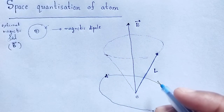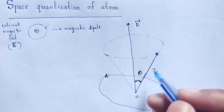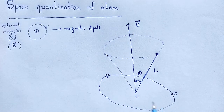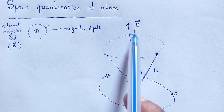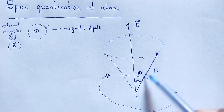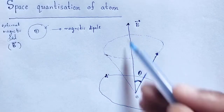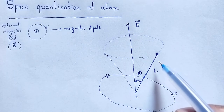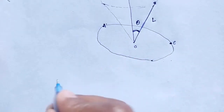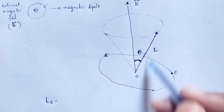The angle between B and L will be theta. Theta is the angle between B and L, and it remains constant as shown in the figure. If the magnetic field B is along the z-axis, the component of L parallel to the field is the z-component of L, which is L cos theta.